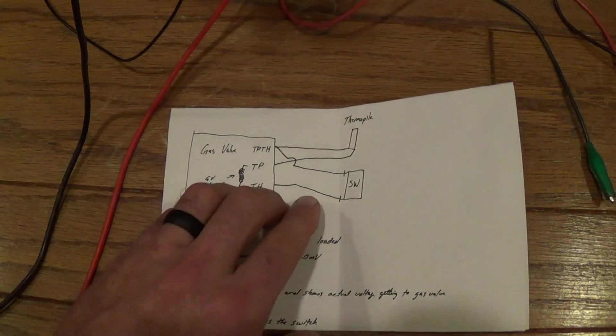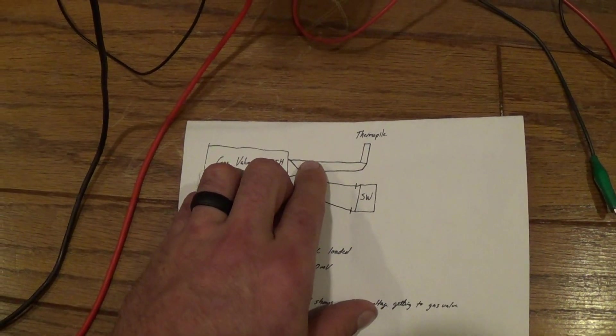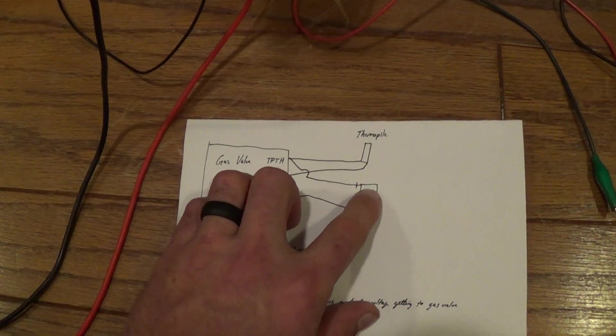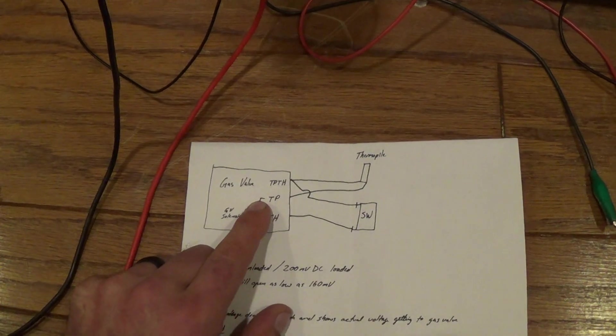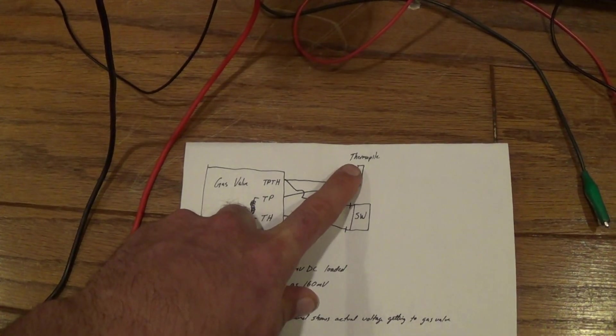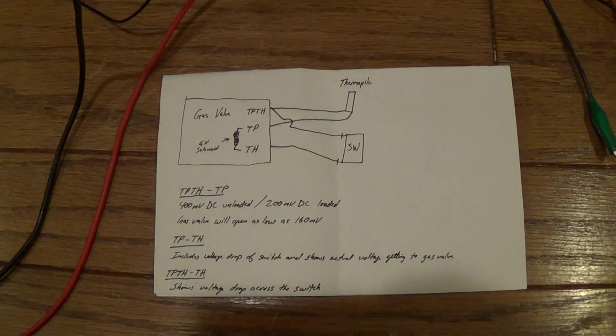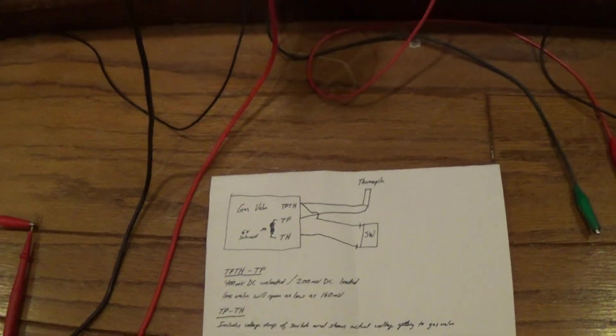I've seen plenty of cases where the thermopile is putting out great voltage, but you have too much voltage drop through the switch to open the gas valve. A lot of people think it's the pilot assembly that's bad, but it's actually the switch that's bad.